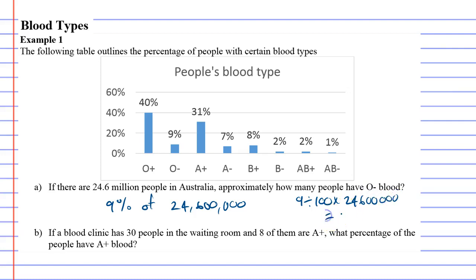Nine divided by 100, times 24,600,000 gives us two million two hundred and fourteen thousand people. So there are over two million people in Australia who would have O negative blood. Now let's look at question B.